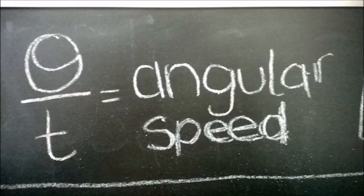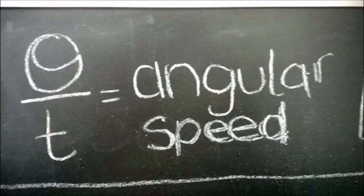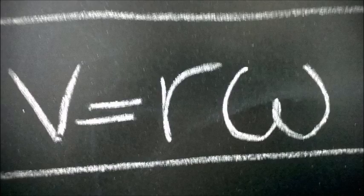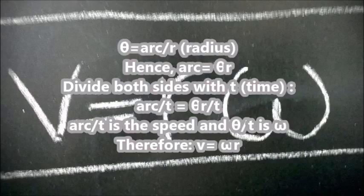Theta upon time is equal to angular speed, which is denoted by omega. Speed is equal to radius into omega.